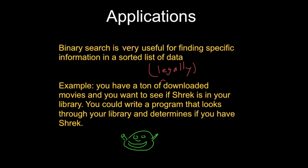So you could write a program that looks through your library and determines if you have Shrek. So you might be with a bunch of friends actually. And you guys are just thinking of movies that you might want to see. And you could just repeatedly query your library for every movie you're interested in seeing. So if your library is big enough, you could actually notice the difference if you wrote this program in linear search versus binary search.